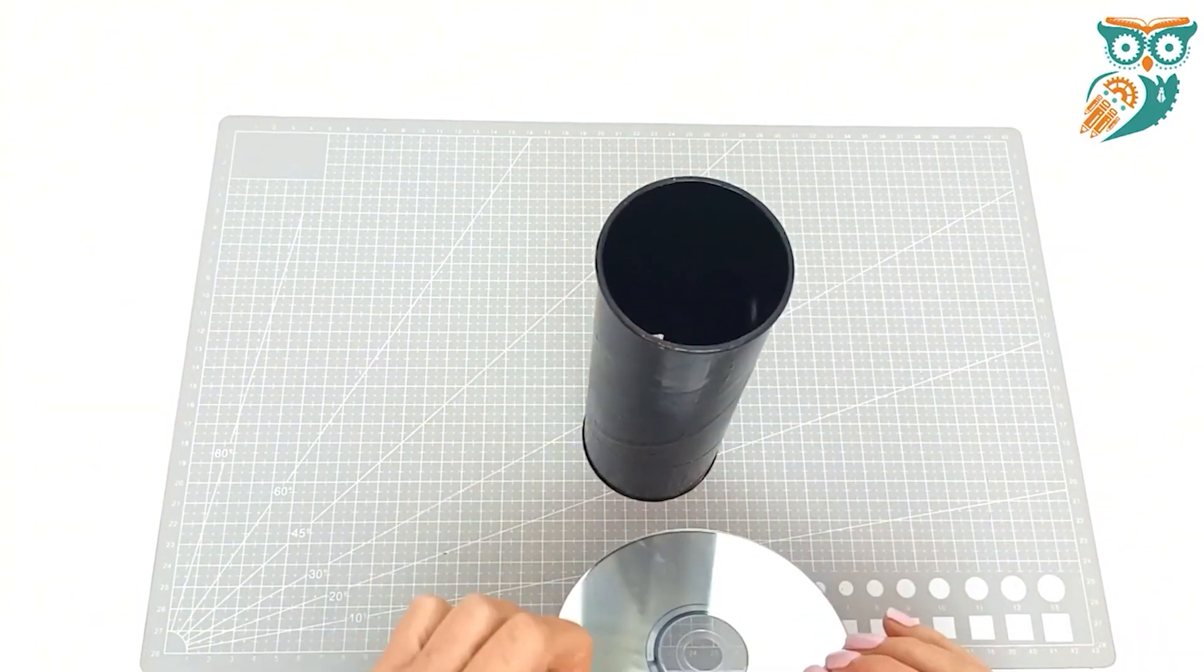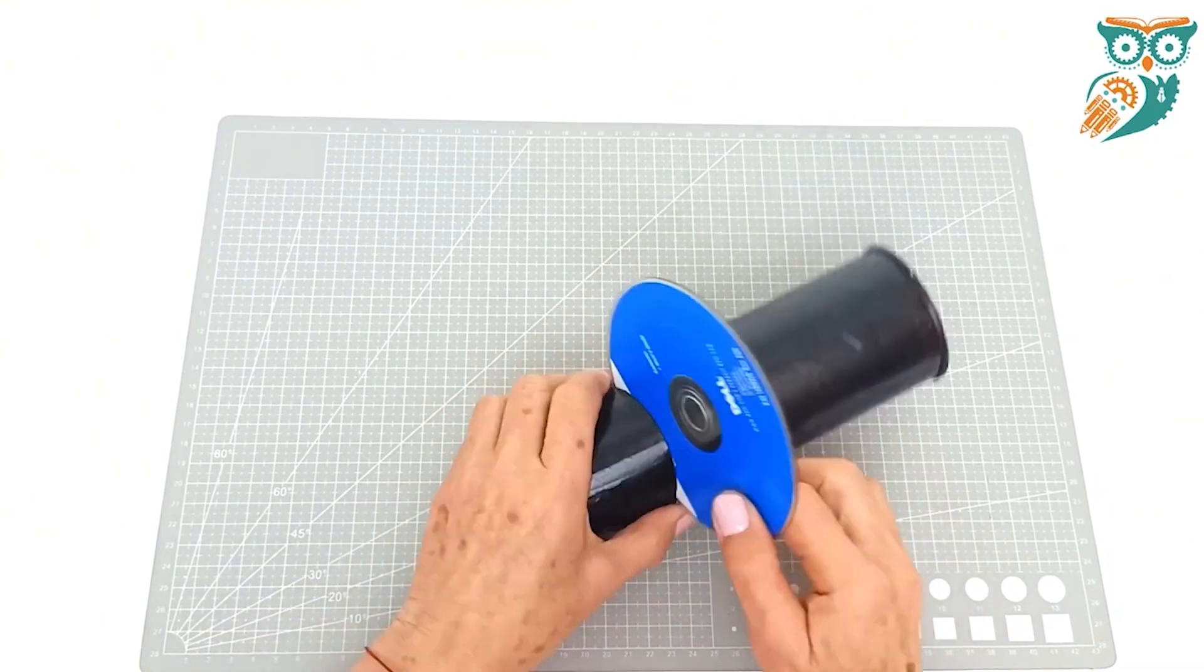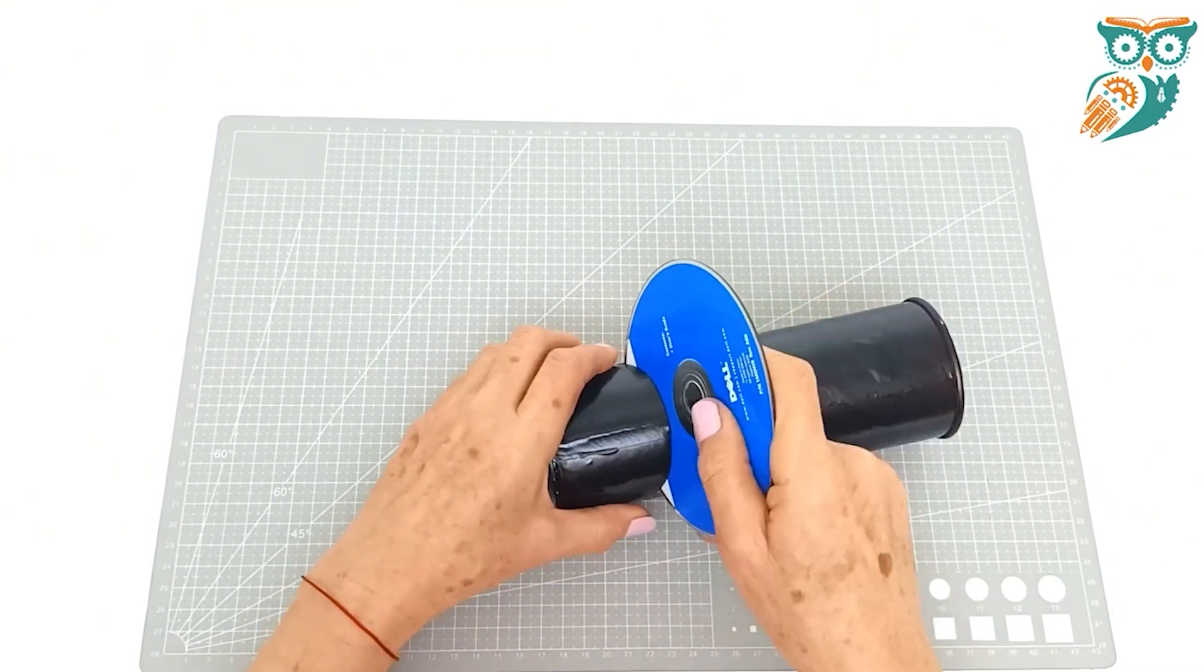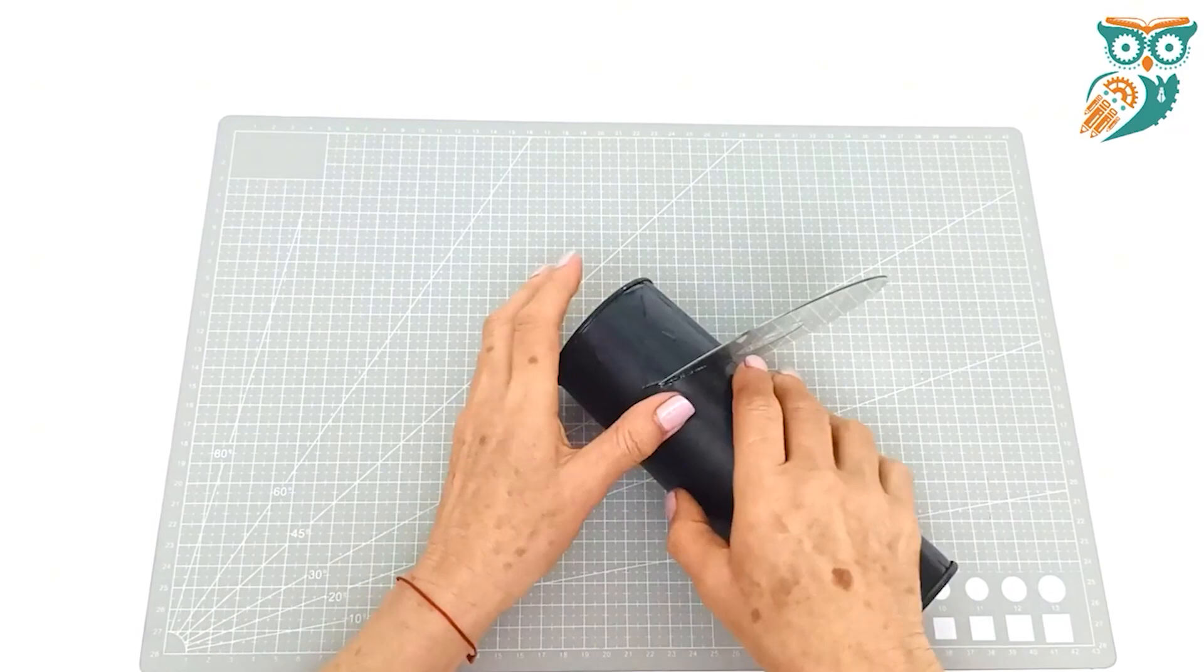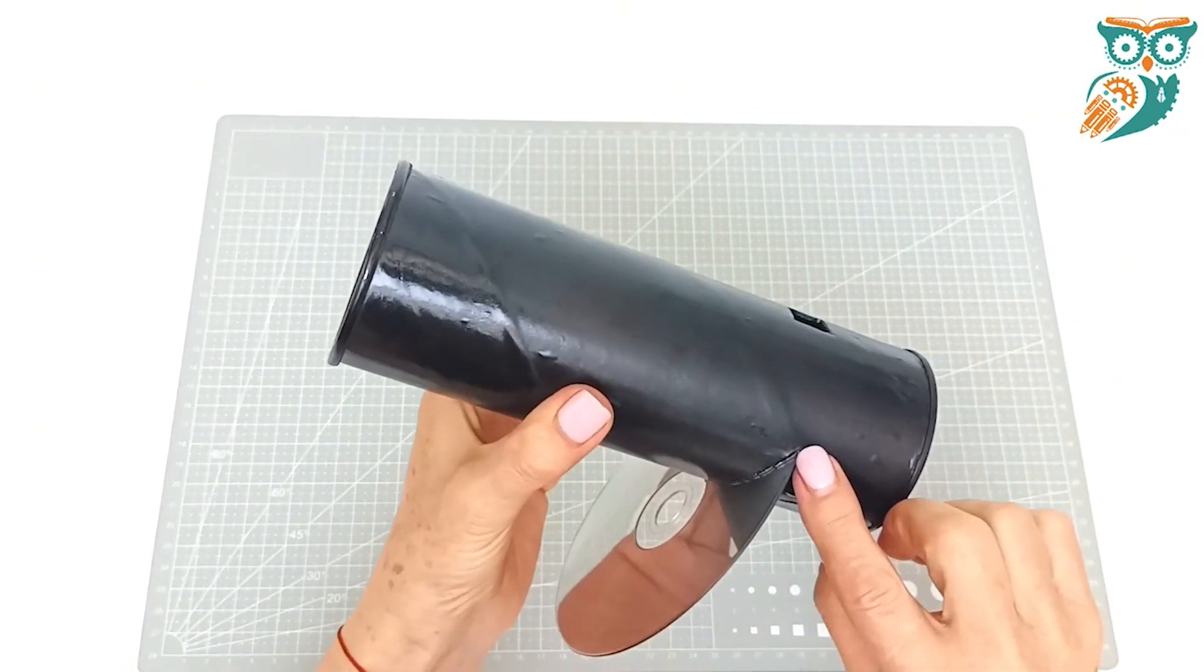Now we're going to take an old CD, you want the shiny side up, and you're going to slide it carefully into that slot that we created. Just make sure it's nice and snug, you want it all the way in right to the edge.